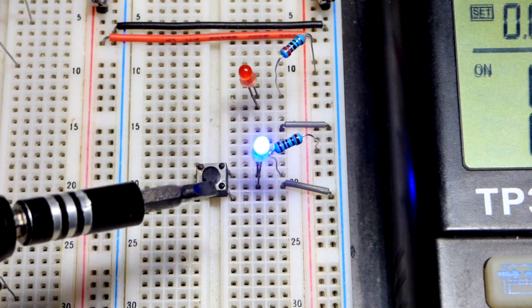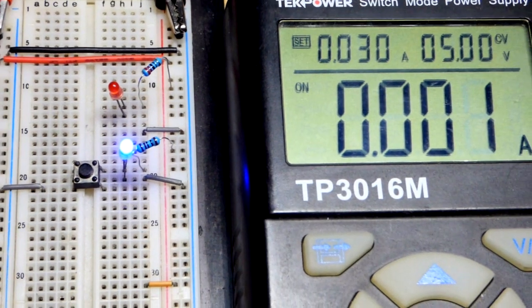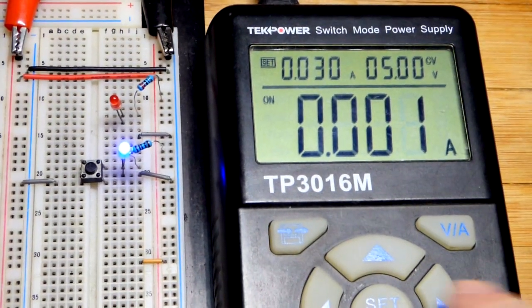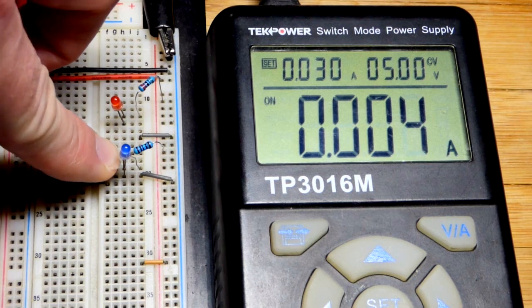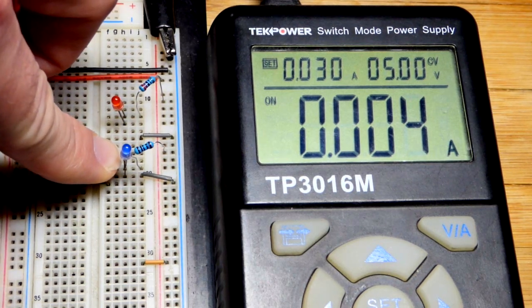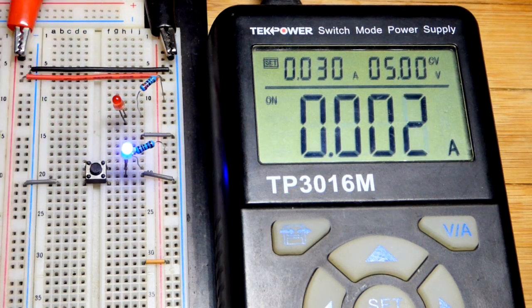And so when the current is going through the LED we have a lower current, and when we short it right to ground now only the resistor is limiting the current. It has more voltage across it, more current going through it right there. So hope that all makes sense, just a simple video today.